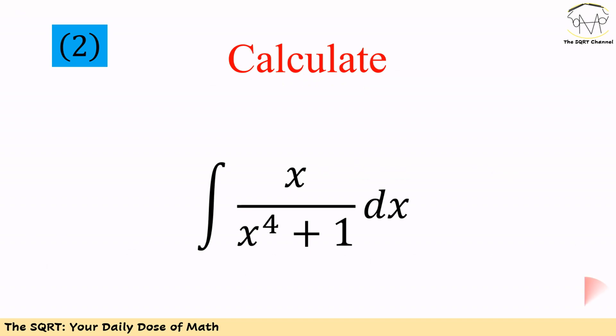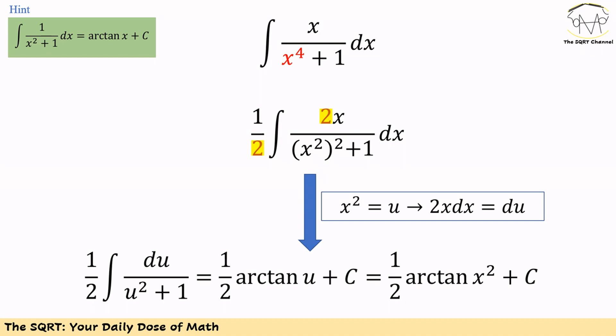With that, let's move to the second problem. We want to find the integral of x over x to the power of 4 plus 1 dx. To solve it, we are going to use x squared to the power of 2 instead of x to the power of 4, and then we are going to multiply and divide by 2. So we will have 1 over 2 times the integral of 2x over x squared to the power of 2 plus 1 dx.